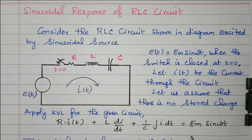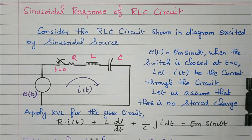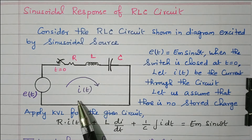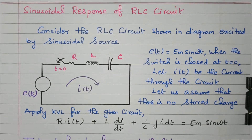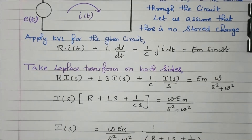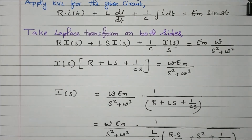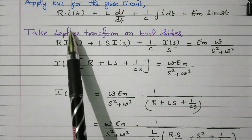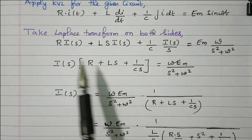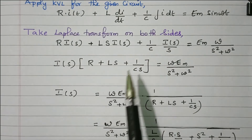From this KVL equation, we need to take the Laplace transform and then the inverse Laplace to find I(T). Taking the Laplace transform converts the T-domain into the S-domain, and the inverse Laplace converts it back to the T-domain so that we can identify I(T). Now we will take the Laplace transform on both sides.